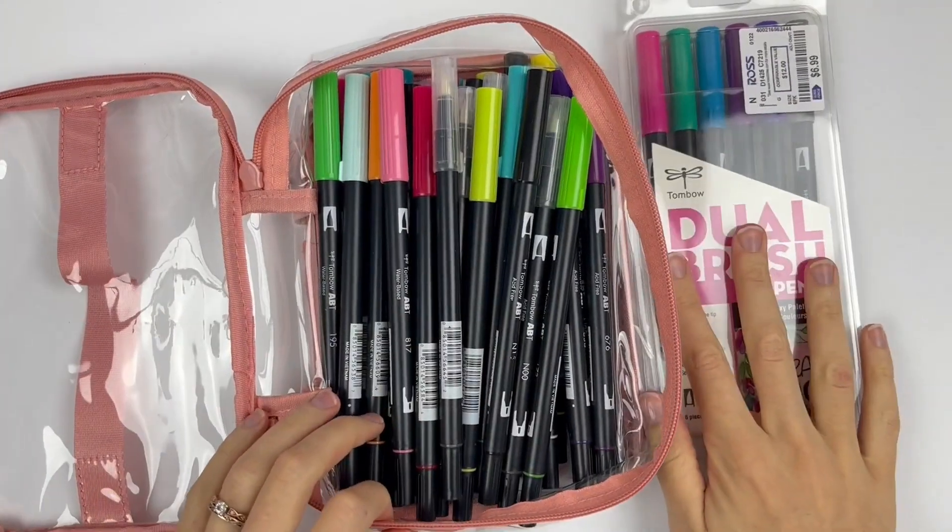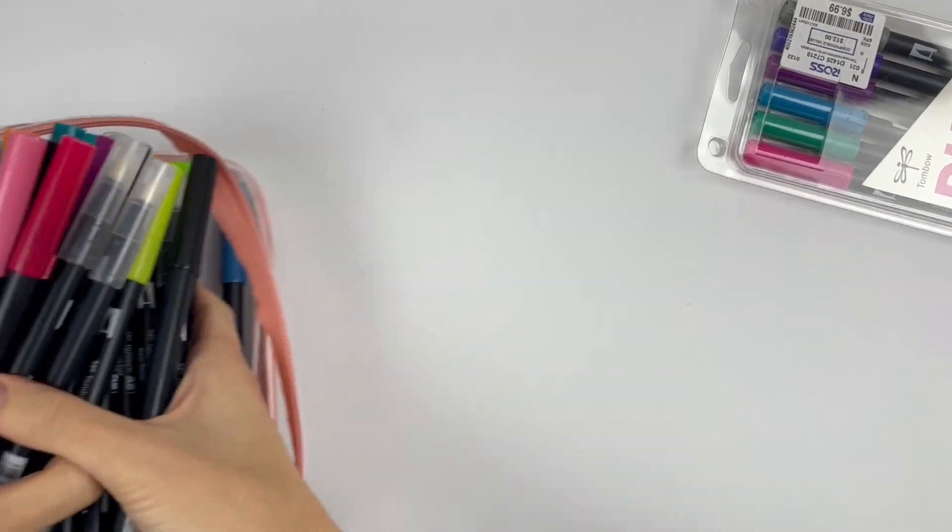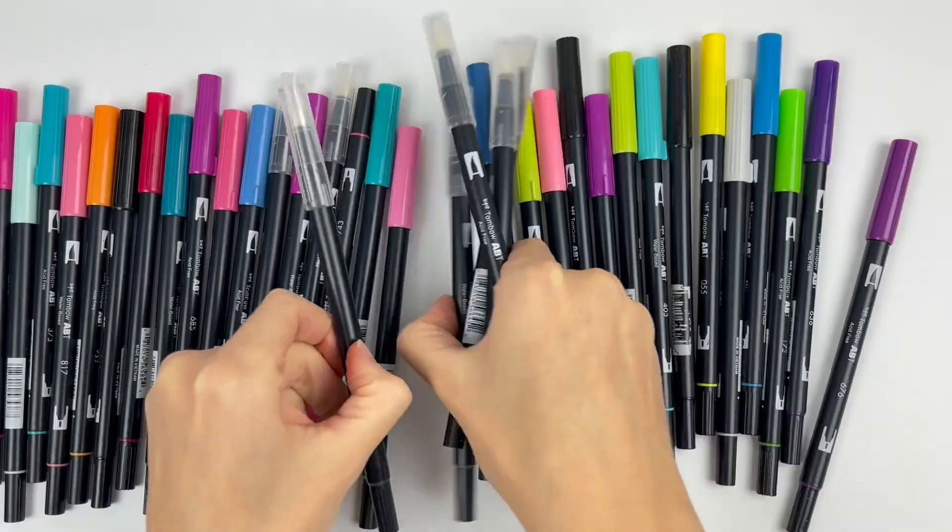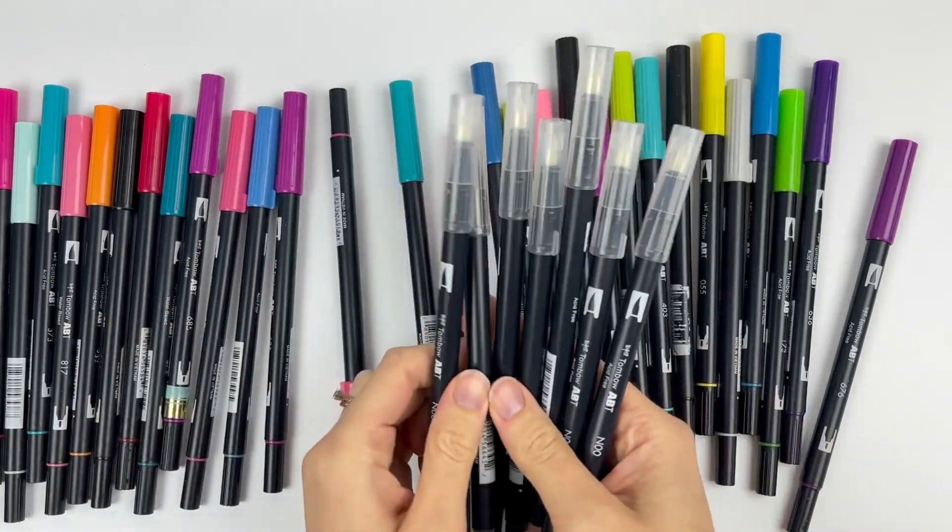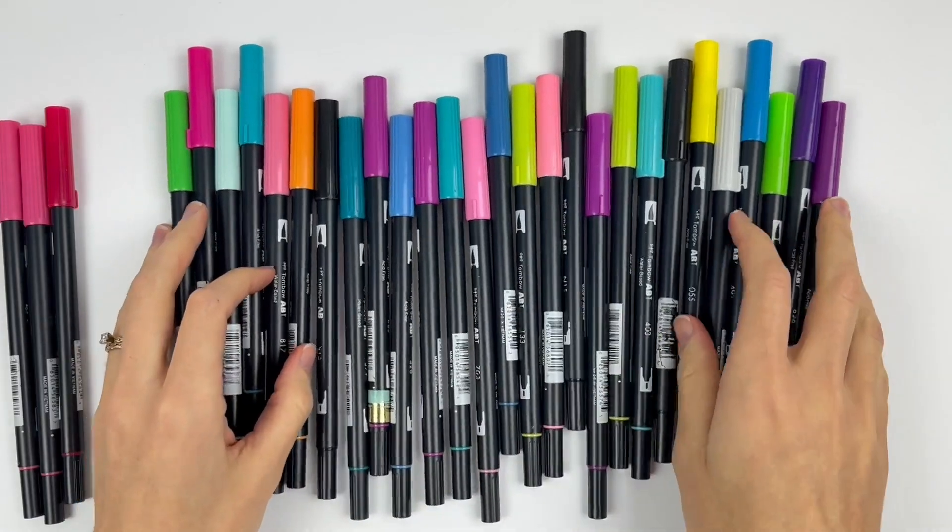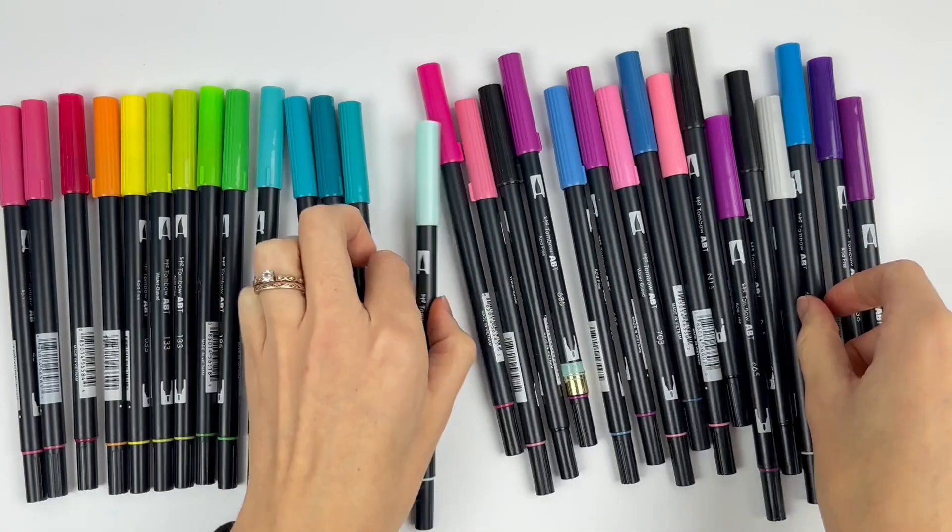Finally, here are the Tombow Dual Brush Pens, and I only have one more set of brush pens after this, so we've almost made it. Thanks for sticking it out with me. I found this Galaxy set at Ross for $7, so that's the thing about Tombow. Yes, they are more expensive, but you can find them on great deals, or you can use your coupon at Michaels. The cost is not so out of reach in my opinion.